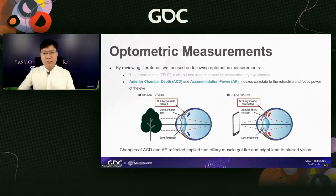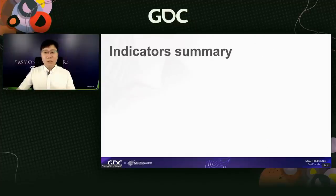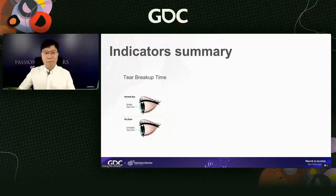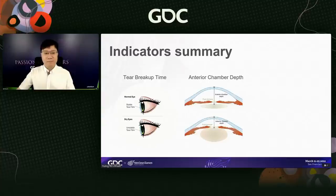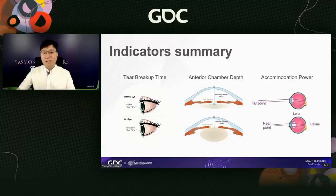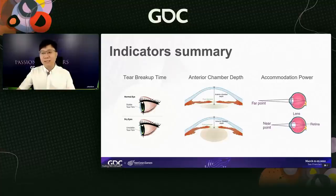When focusing on distant objects, ciliary muscles relax and the lens flattens. When focusing on near points, ciliary muscles contract and the lens thickens. After long durations of focusing on near points, ciliary muscles may get tired. Changes in ACD and AP indicate that ciliary muscles are tired and might lead to blurry vision. Using these optometric measurements, we can further understand the mechanism of visual fatigue when playing games.